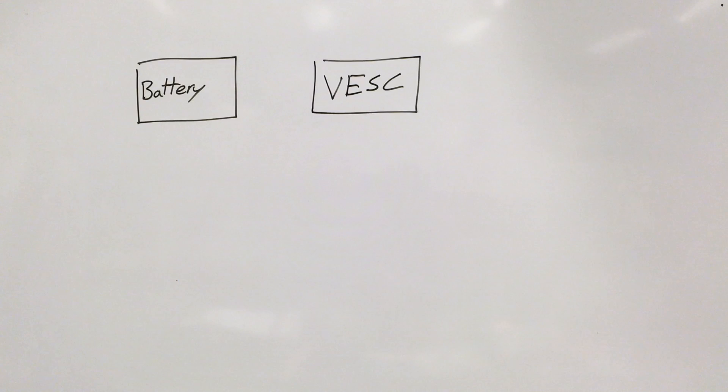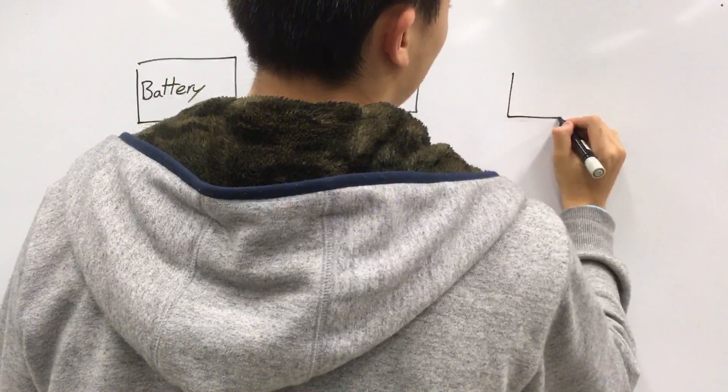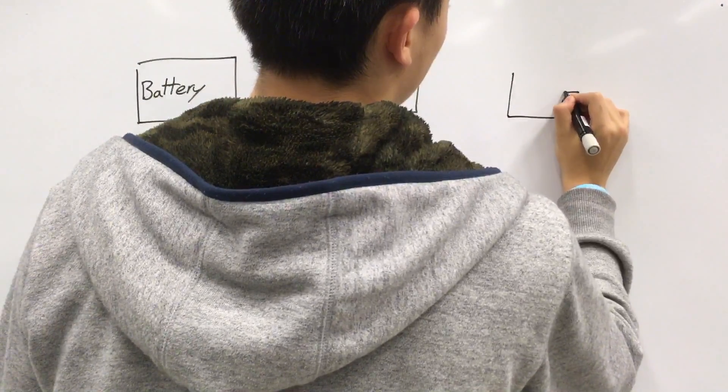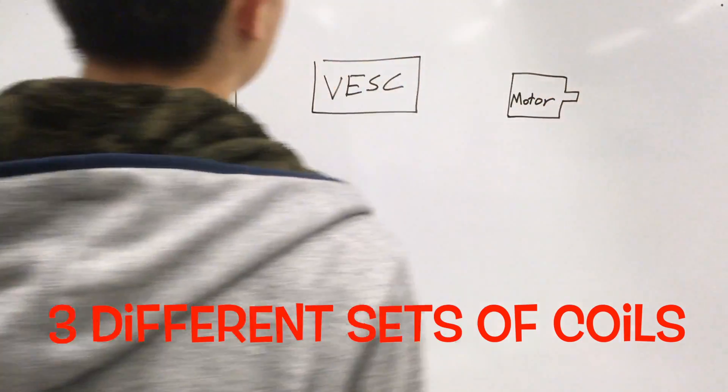And you can adjust the percentage of deceleration throughout the ride. Now you can see on the other side of the VESC is a motor. So now these motors have three phases which have three coils in them.